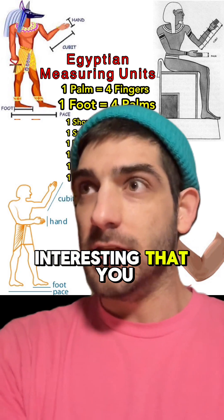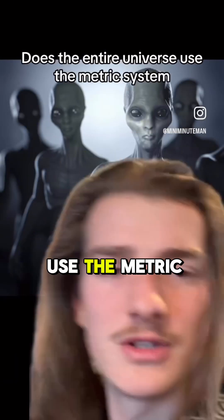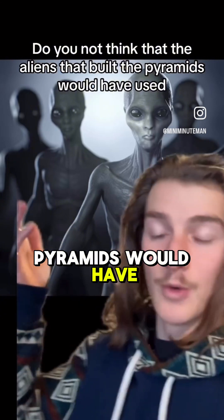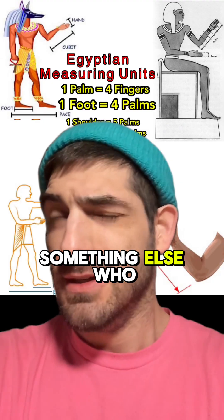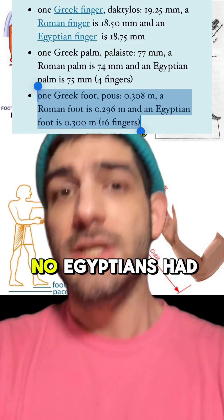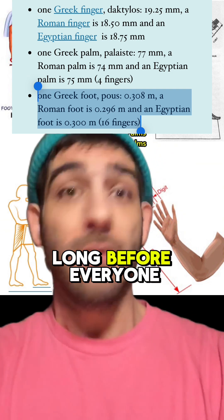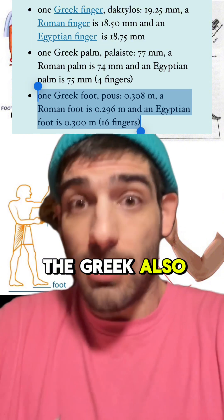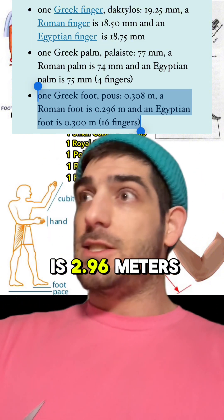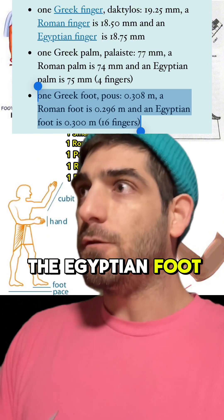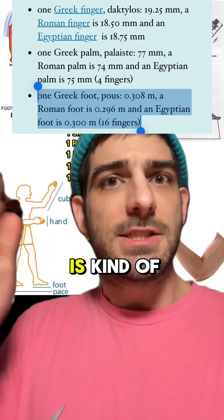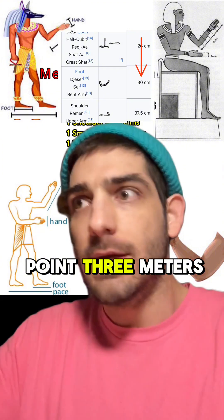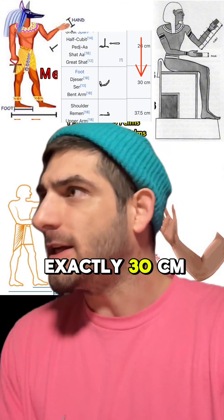I find it interesting that you think the entire universe used the metric system while America's still using imperial. Do you not think that the aliens that built the pyramids would have used something else? No, the Egyptians had the foot long before everyone else. The Romans had a foot, and the Greek also had a foot. The Roman foot is 2.96 meters. The Egyptian foot. How is the Egyptian foot exactly 0.3 meters? It's exactly 30 centimeters?